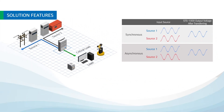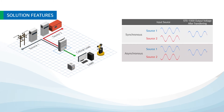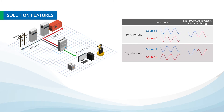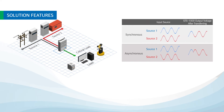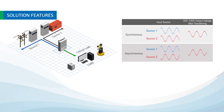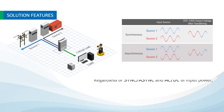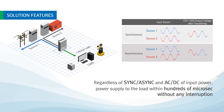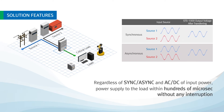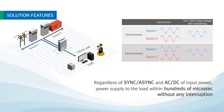Existing STS does not allow transferring under asynchronous input power conditions, or transfers power within tens of milliseconds. In contrast, STS-1000 can reliably transfer power within hundreds of microseconds at any point, regardless of synchronous or asynchronous input power and AC or DC power.